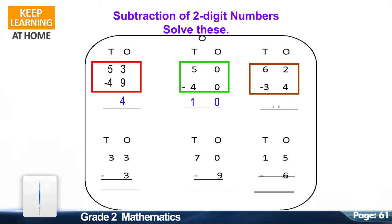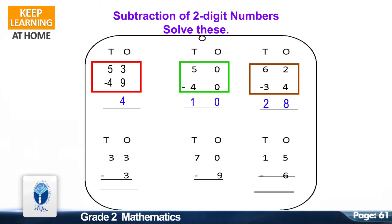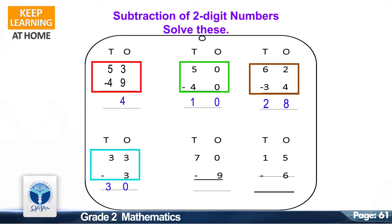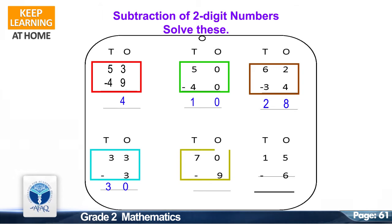Now solve the next question: 62 minus 34. The correct answer is 18. Now solve the next question: 33 minus 3. The correct answer is 30.